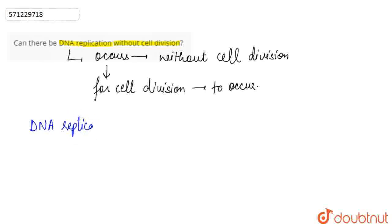It is mandatory that DNA replication should take place for cell division to occur. So basically, first the DNA replication takes place and then the cell division occurs.